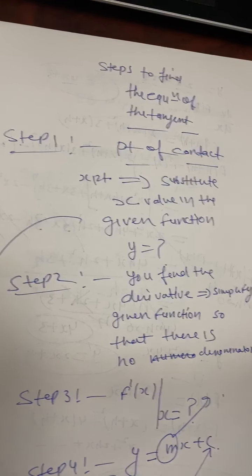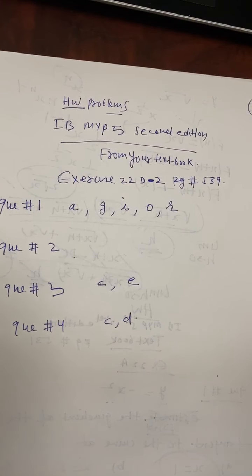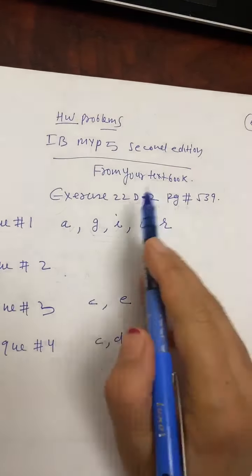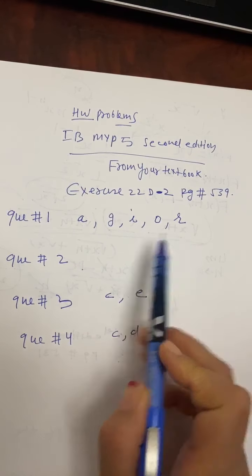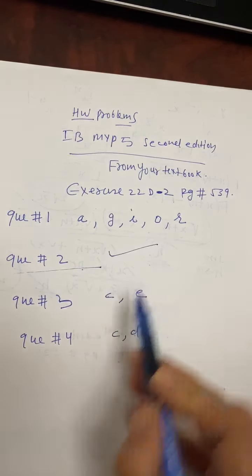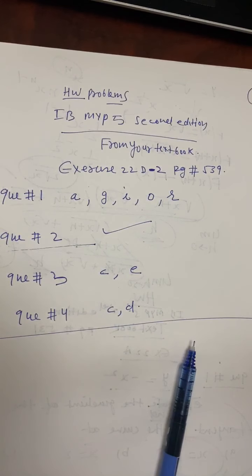For homework, complete questions from your textbook Exercise 22D2, page 539: question 1 parts a, g, i, o, r; question 2 (all parts); question 3 parts c and e; and question 4 parts c and d. That's it for today's lesson.